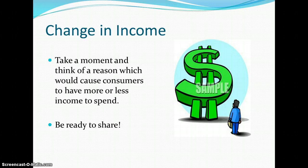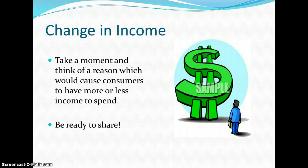Now we could take Detroit, Michigan; Flint, Michigan; a lot of places in Ohio — Stark County, Ohio — where there aren't the jobs and incomes have gone down. Many people who used to work making cars are now working at Walmart and places like that, so the income has gone down. Let's take demand for BMWs. In Flint, Michigan, is there going to be a big demand for BMWs? No. It's going to go down because there's not as much money.